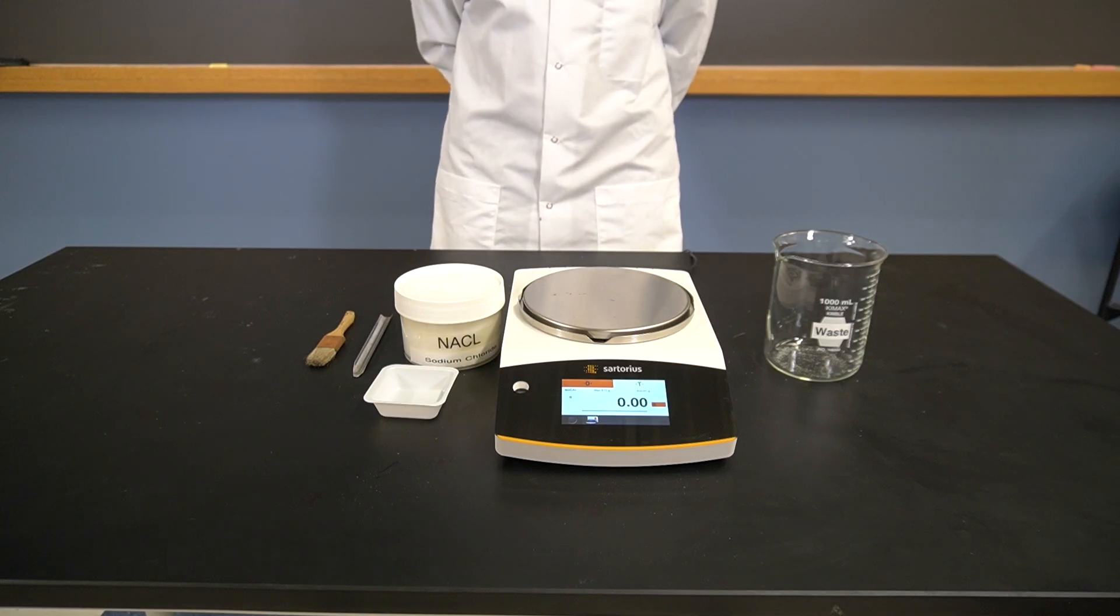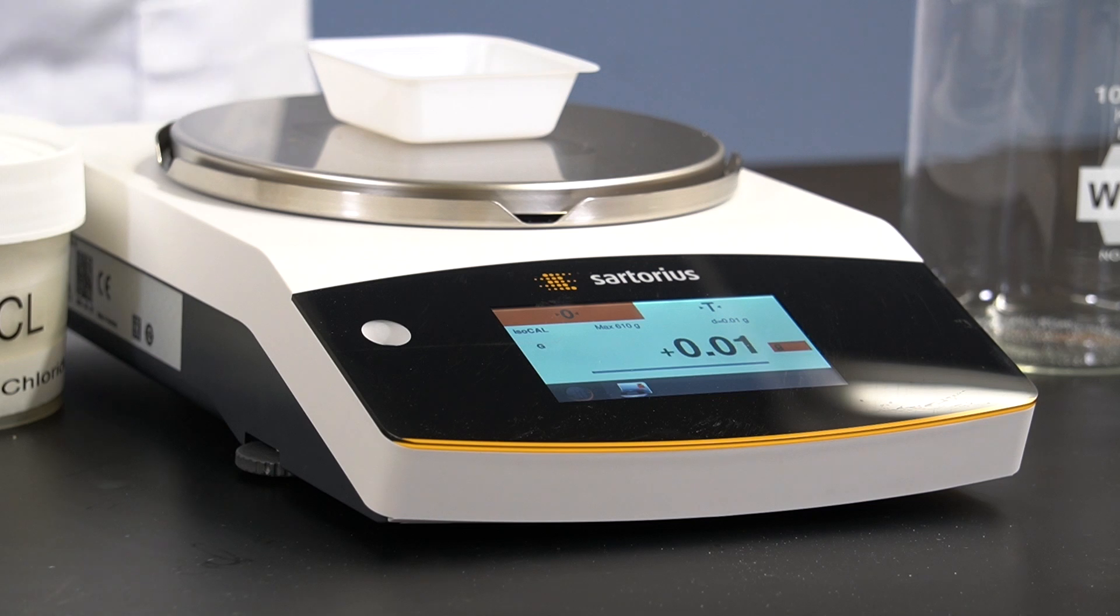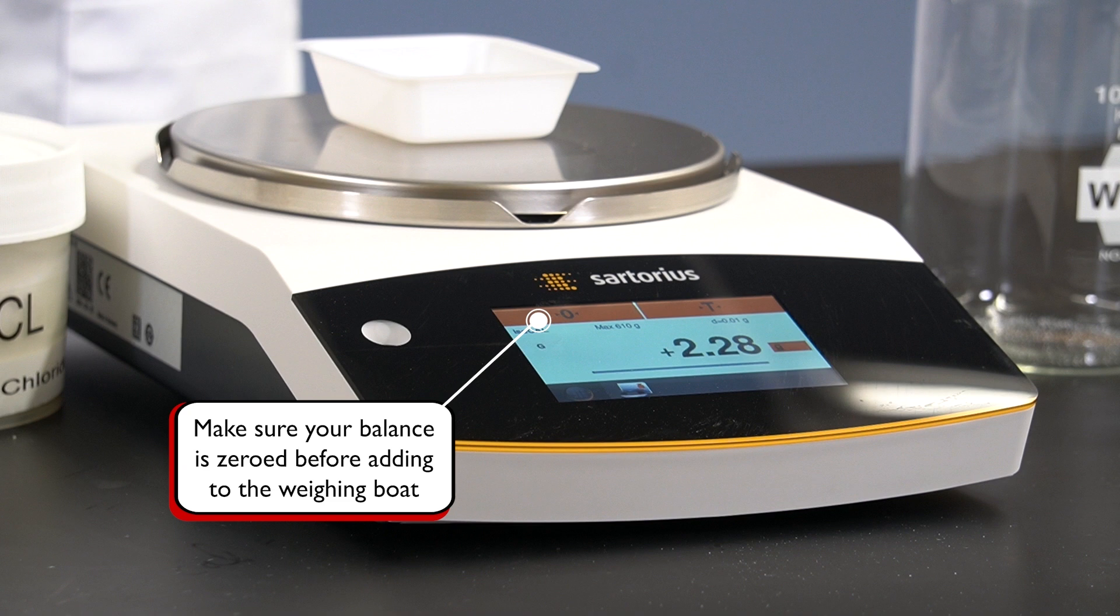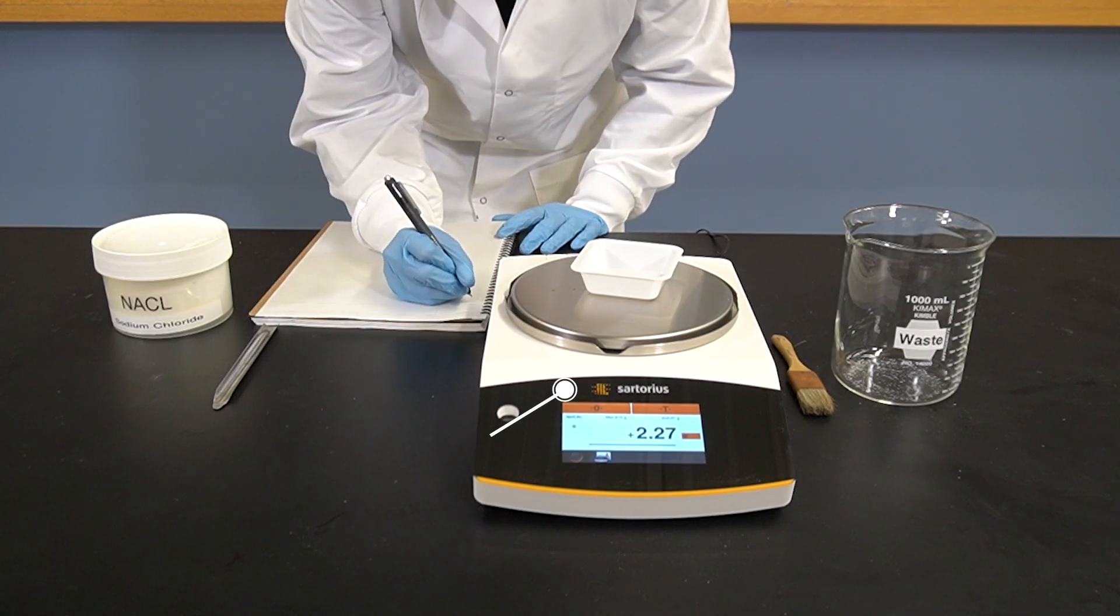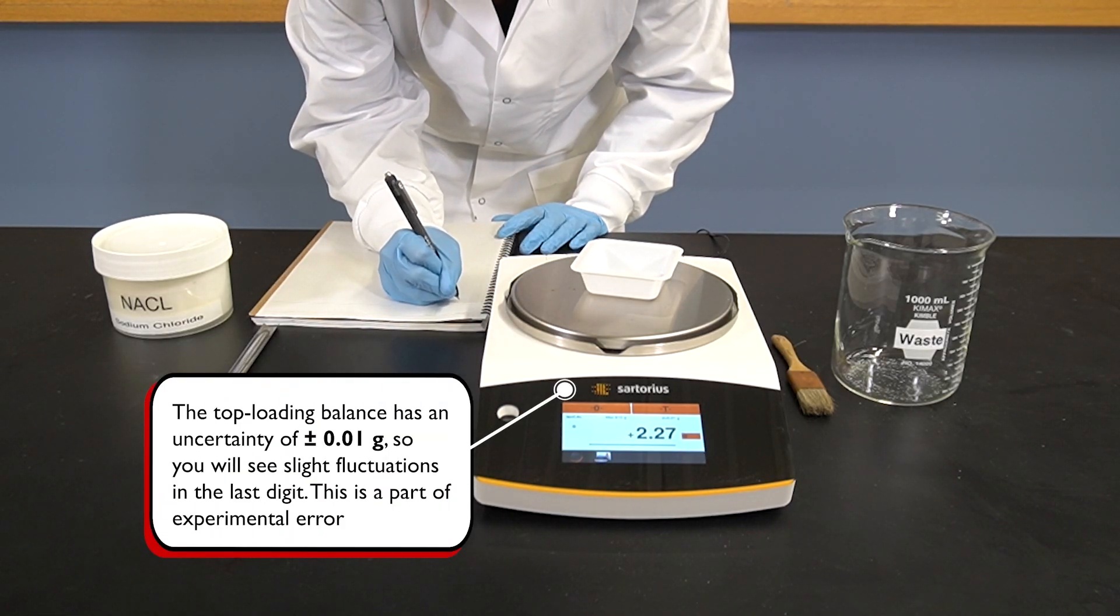Before adding sodium chloride to the weighing boat, we should first measure the mass of the empty boat by placing it on the balance pan. Make sure that the balance is tared and displaying zeros before weighing the boat. Record the mass of the empty boat.